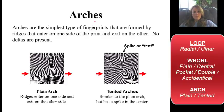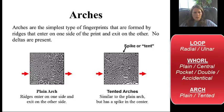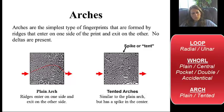The least common type of print is the arch, and this is the simplest type. You'll notice the arrows — if I start my arch, it's kind of like a gradual hill. If it starts on one side of the print and exits the other, that makes it an arch. The plain arch is a gradual bump. If you squish that together, it would tent up — so a spike or a tent is called the tented arch.